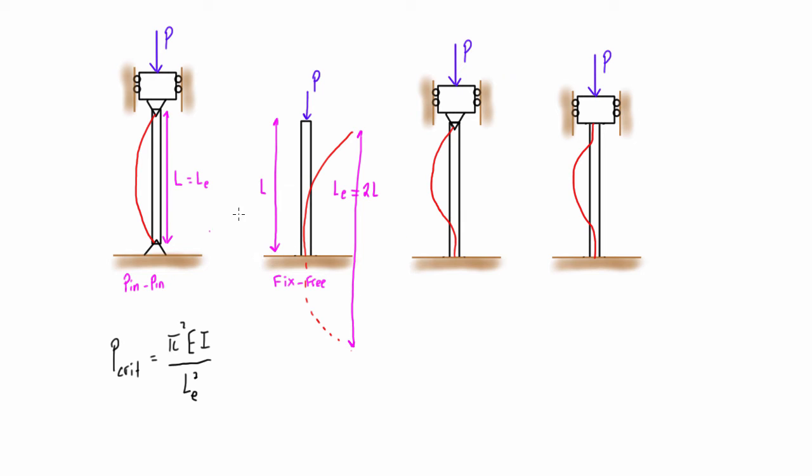Now without deriving all of these numbers, for the case where we have a column that is fixed on both ends, so it's a fix-fix, then its effective length is going to be LE equal to 0.5L.